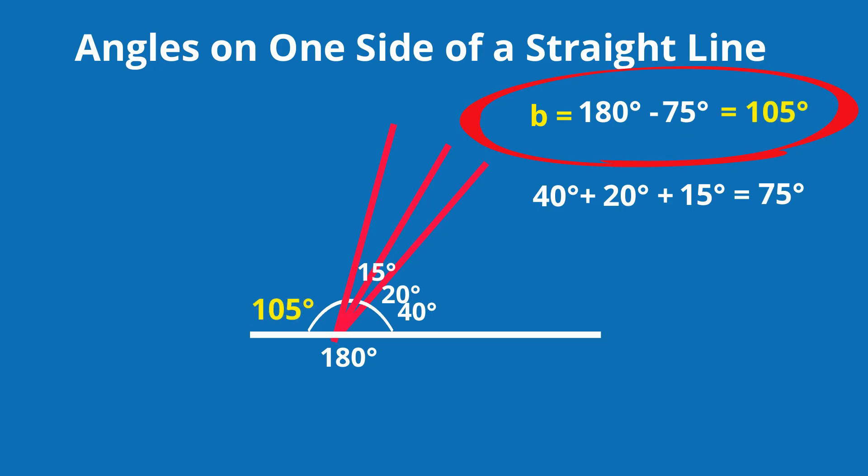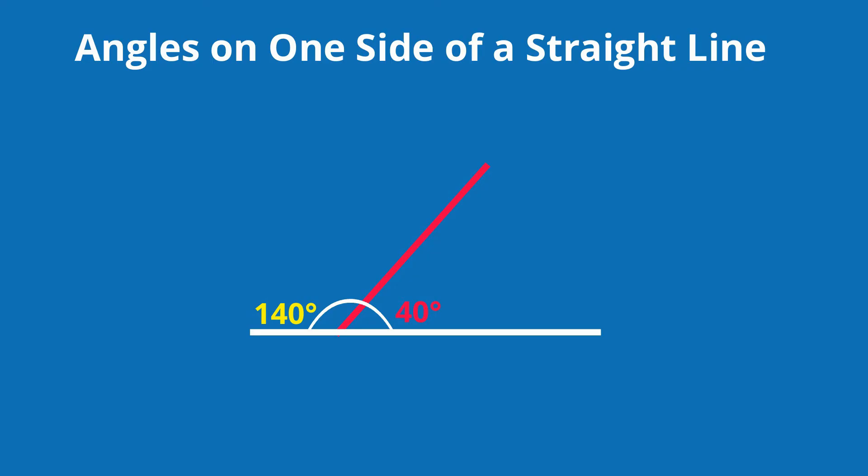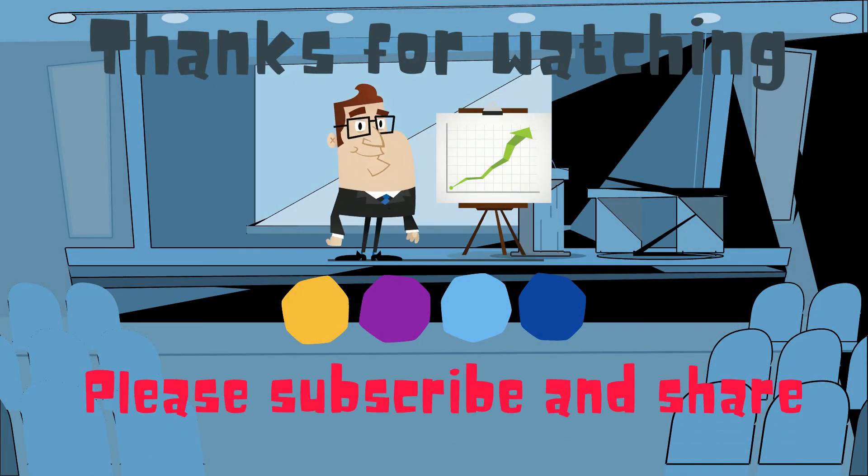So in summary, the angles on one side of a line always equal 180 degrees. Thanks for watching and Moo Moo Math uploads a new math and science video every day. Please subscribe and share.